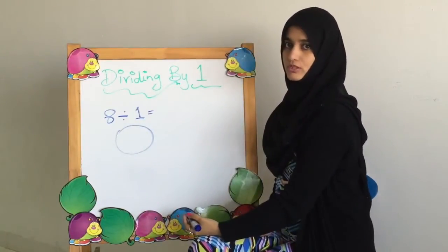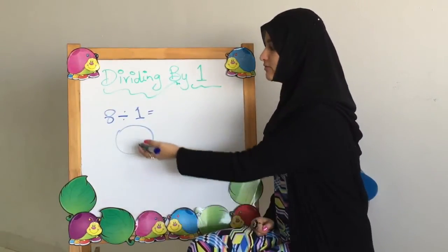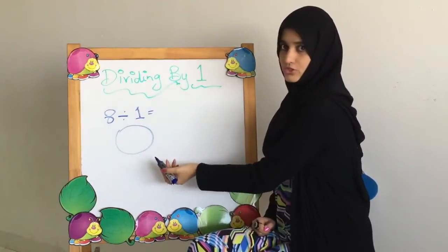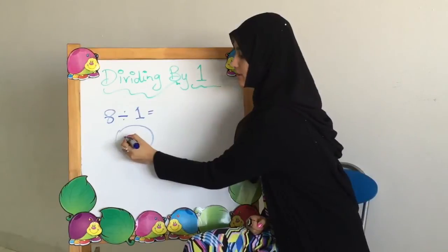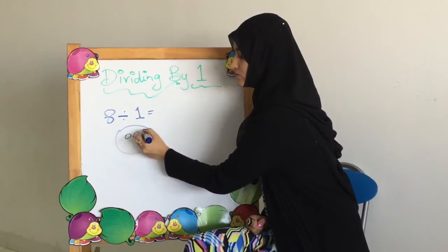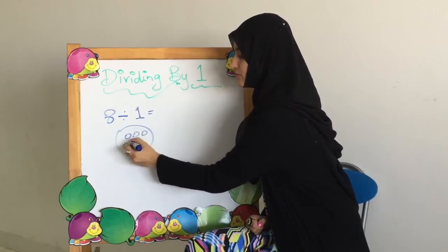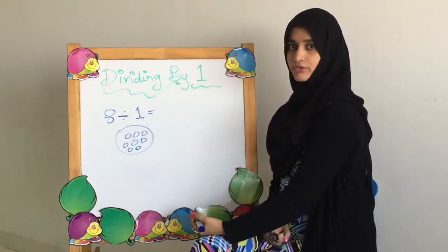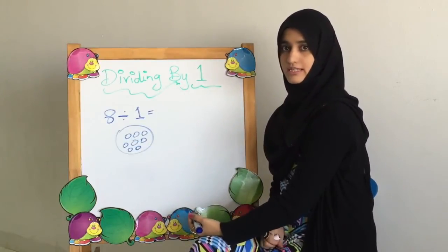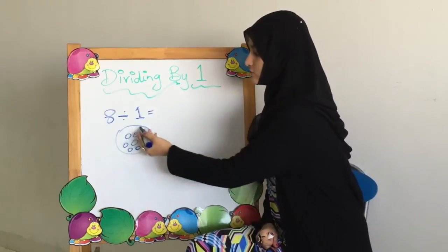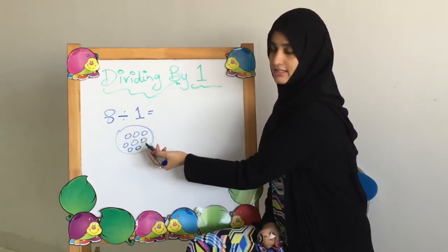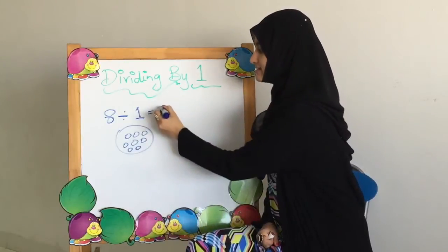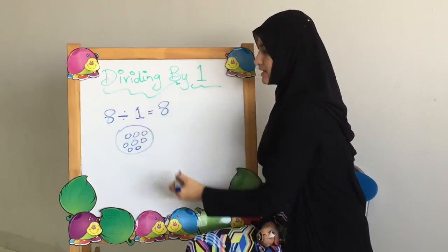We have to distribute the number 8. Since we have only one set here, all the balls we are going to distribute are going to come within the same set — 1, 2, 3, 4, 5, 6, 7, 8. Now, to find the answer, we see what is the set size. There is one set and in that set there are 8 balls. So the set size is 8, which is our answer.